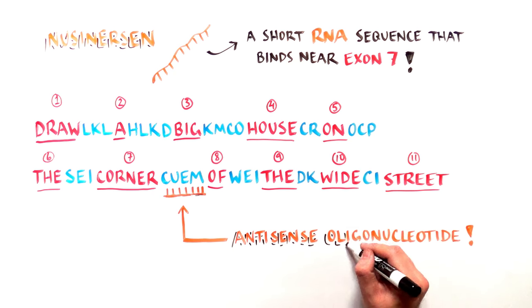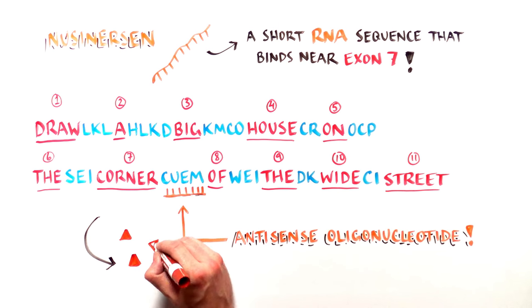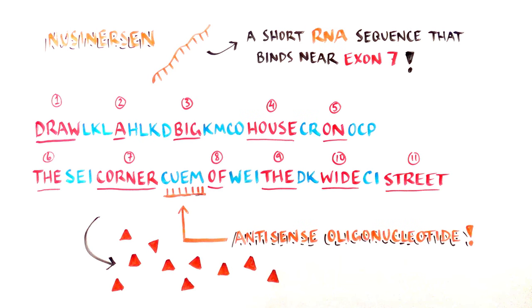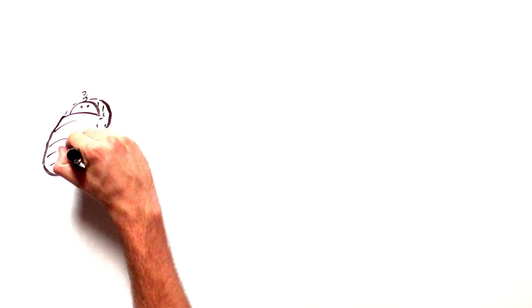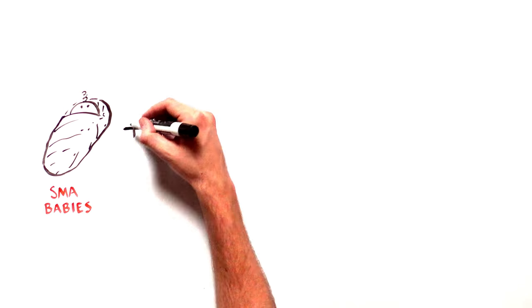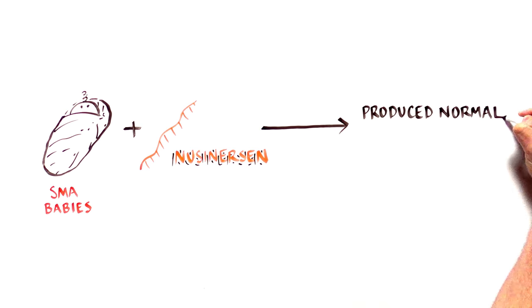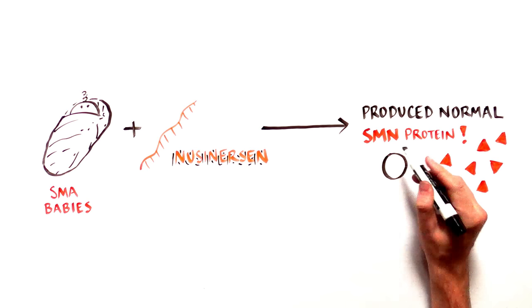Exon 7 is now included in the edited RNA message, which in turn generates full-length functional SMN protein. By preventing exon 7 from being skipped, nusinersen reverses symptoms in SMA patients.